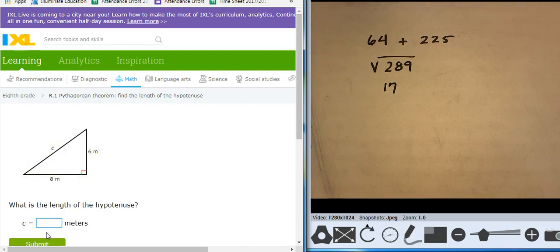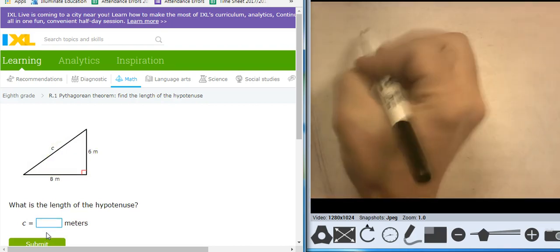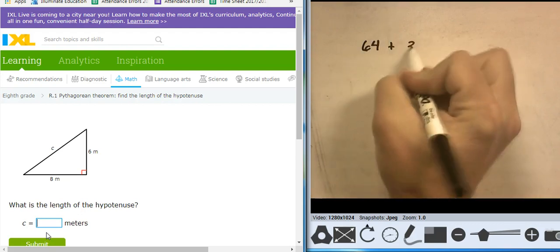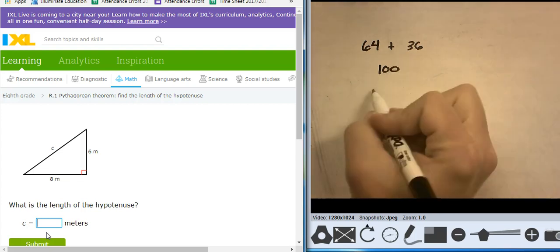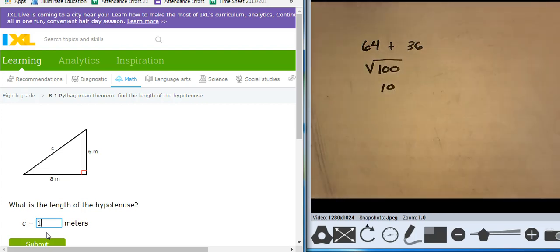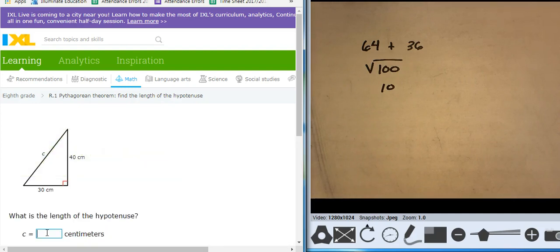This is going to be 8 squared plus 6 squared. 8 squared is 64. 6 squared is 36. Add them together. I get 100. Take the square root of it. I get 10. The missing side is 10. That hypotenuse is 10.